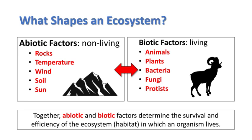Together, abiotic and biotic factors determine the survival and efficiency of an ecosystem or habitat in which an organism lives. Some factors let the organism grow and thrive, but if you have a negative abiotic factor like a hurricane come through, that could decimate the plant life and make it difficult for animals like a mountain goat to survive. It's a give and take.